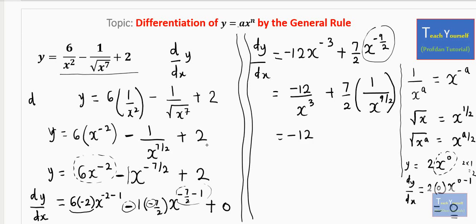And this can be minus 12 over x^3 plus 7 over 2. Remember, your x raised to power 9 over 2 is going to be root of x power 9. And this is your final answer using the general rule.